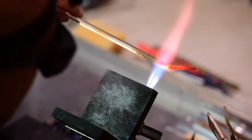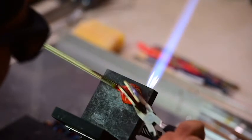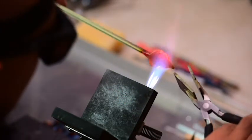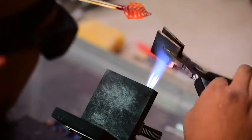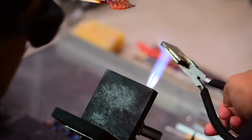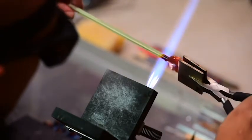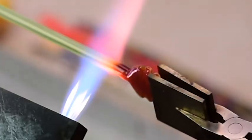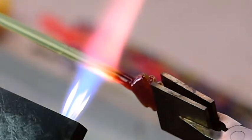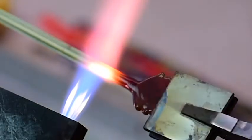At this point, our pendant is pretty much formed. Now we're going to put the bale or the neck on it so you have something to hang it off of. You normally want to keep your tools out of the flame, but with metal tools, if they're cold, you can hit them with a little heat first so it doesn't crack your glass.